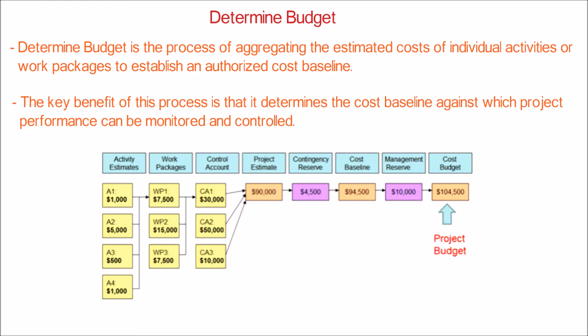Adding a contingency reserve of $4,500 for the known risks, we can estimate the cost baseline by adding the project estimate with the contingency reserve, and the value is $94,500. Now we will add a management reserve of $10,000 to handle any unknowns that might arise during the project. Adding the management reserve and cost baseline will give us the project cost budget, and the value in this example is $104,500.